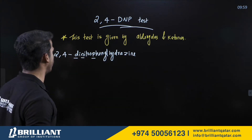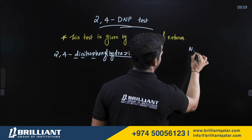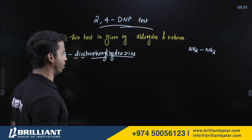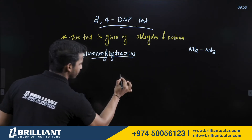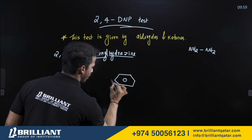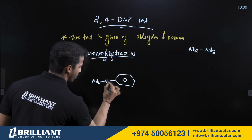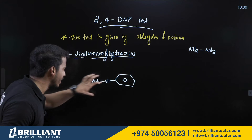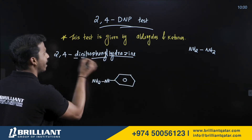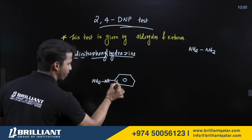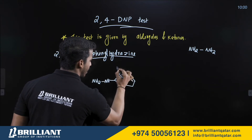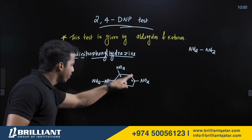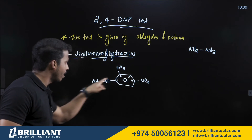Hydrazine is chemically NH₂–NH₂. Phenylhydrazine means a hydrazine group (–NH–NH₂) attached to a phenyl ring. In 2,4-dinitrophenylhydrazine, there are two nitro groups at the second and fourth positions of the phenyl ring. The hydrazine part connects at position one, and nitro groups are at positions two and four.